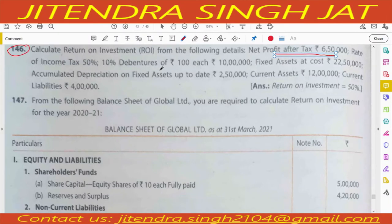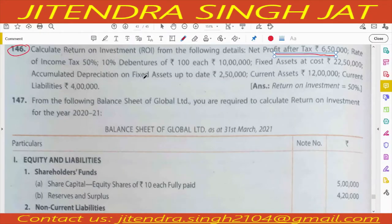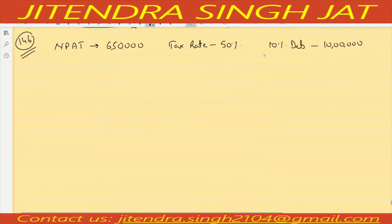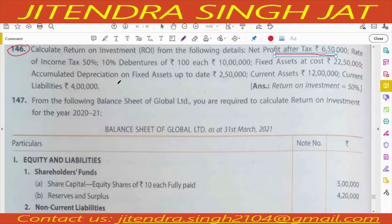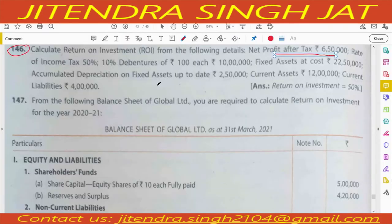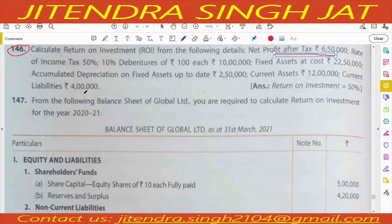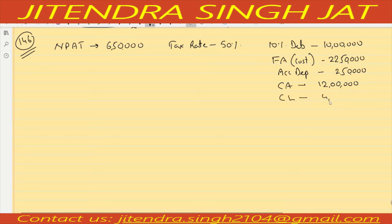10 percent debentures of 10 lakh are given as long term debt. Fixed assets at cost are given as 22 lakh 50 thousand, accumulated depreciation is given as 2 lakh 50 thousand, current assets are given as 12 lakh, and current liability is given as 4 lakh.